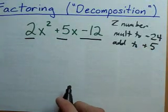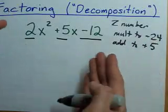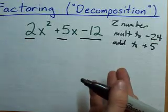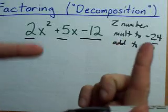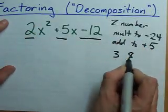I need to find those two numbers. Numbers that multiply to 24. 1 and 24, those don't add to 5. 2 and 12, those don't add to 5. 3 and 8, the difference between those is 5. Maybe we can do something with that.